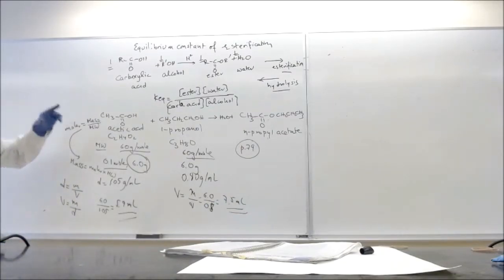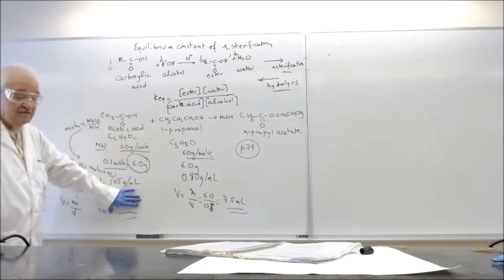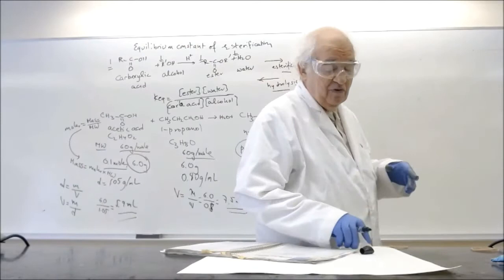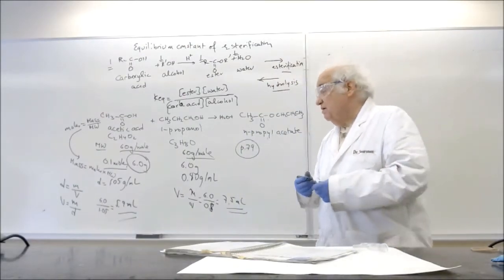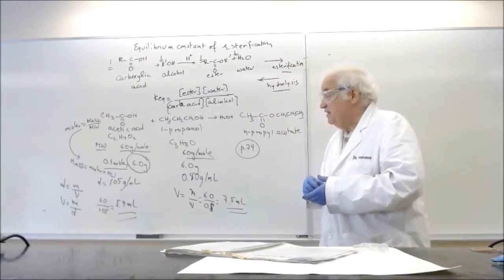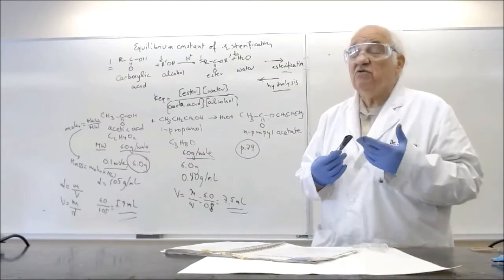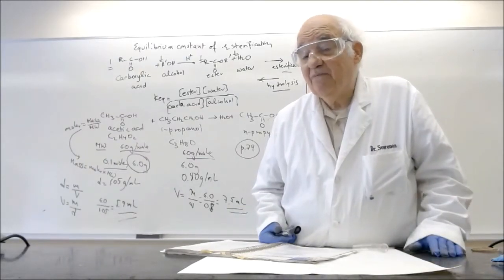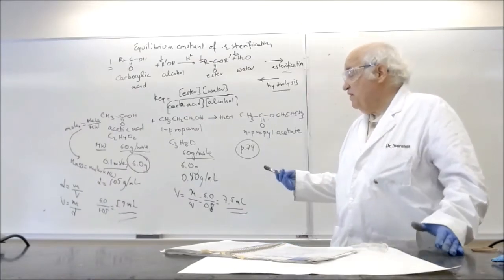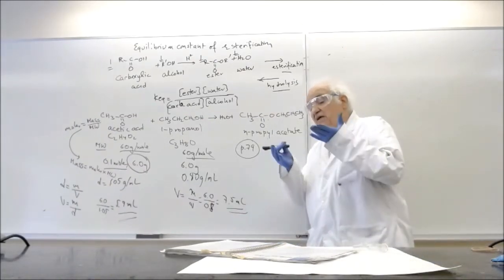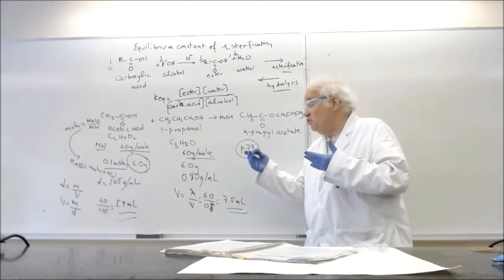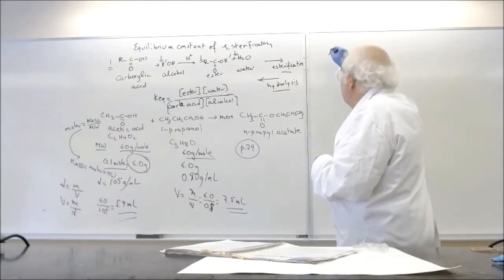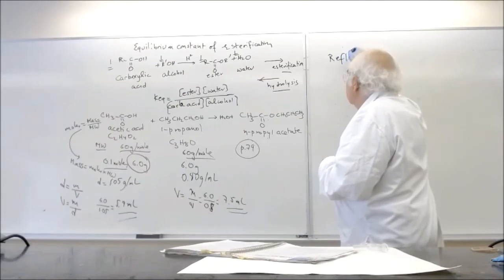So what you're supposed to do now is you're supposed to take 5.9 milliliters of this and 7.5 milliliters of that. And you can correct me if I'm wrong with the calculations. But the important thing is that the reaction doesn't take place at room temperature. What we need to do is we need to heat it up. Now the problem that we have with heating up is that when you heat up something, it evaporates, so you lose some of the starting material. And so therefore in this case we will use something that is called a reflux.